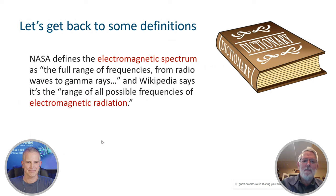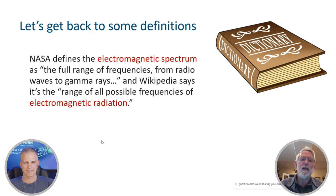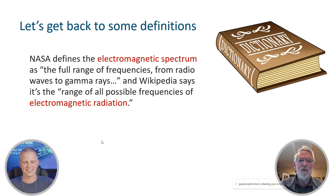They're awesome for very cheap — not the same performance as a $60,000 VNA, but sure fun to have around the ham shack or for hobbyists. NASA defines the electromagnetic spectrum as the full range of frequencies from radio waves to gamma rays. Wikipedia says it's the range of all possible frequencies of electromagnetic radiation. So we have two related terms: electromagnetic spectrum and electromagnetic radiation.